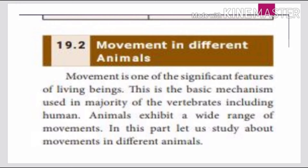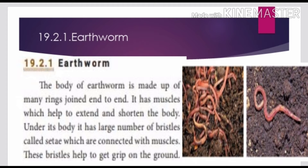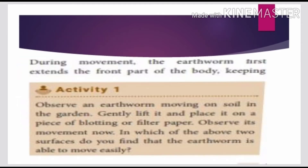Section 19.2.1: the earthworm. The body of the earthworm is made up of many rings joined end to end. It has muscles which help to extend and shorten the body. It has a large number of bristles called setae which are connected with muscles. These bristles help to get a grip on the ground.